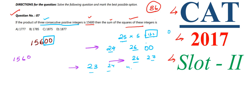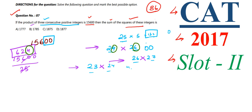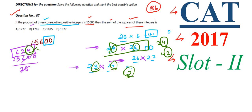We divide 15,600 by 25 to get 624. Now we check which pair of the remaining two numbers multiplies to 624 by just checking the last digits. For {24, 26}: 6 × 4 = 24, last digit 4 — matches 624. For {26, 27}: 7 × 6 = 42, last digit 2 — doesn't match. For {23, 24}: 4 × 3 = 12, last digit 2 — doesn't match.